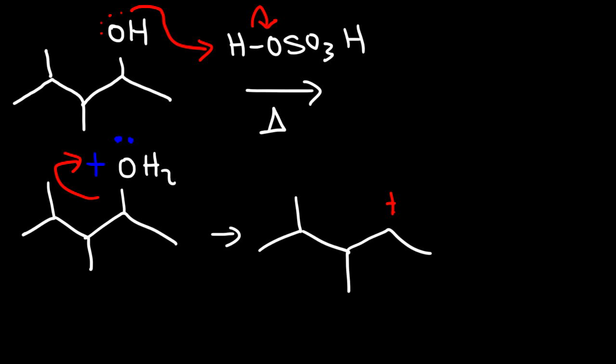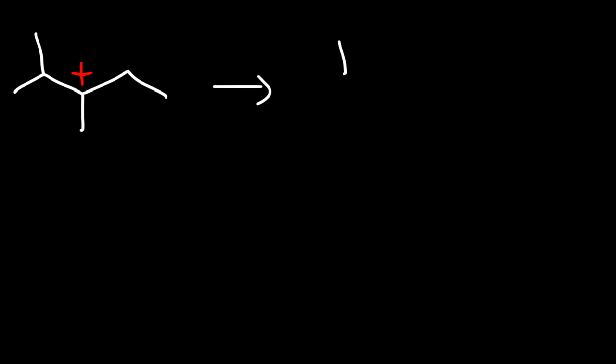That secondary carbocation is adjacent to a tertiary carbon, so a hydride shift will occur. Now we have a tertiary carbocation. We could form the double bond anywhere around that carbocation — here, here, or here. Therefore, we can get any one of three products.